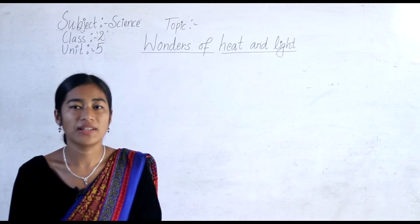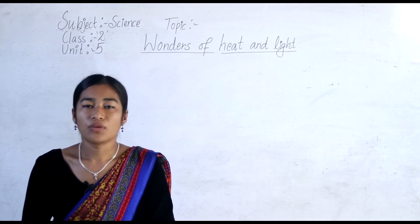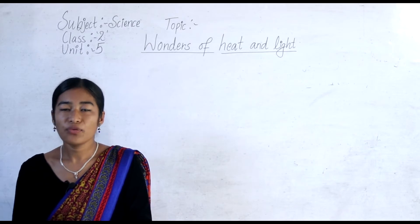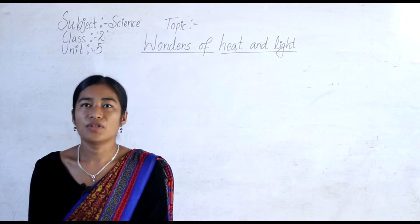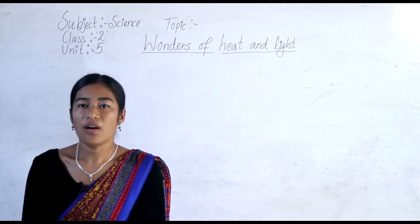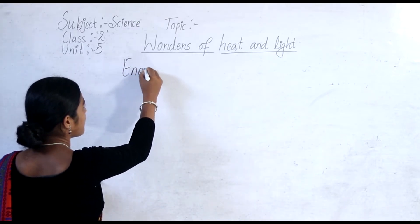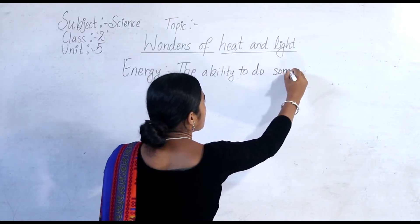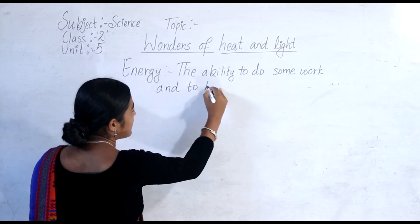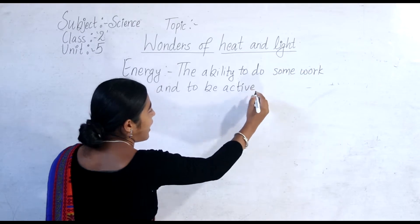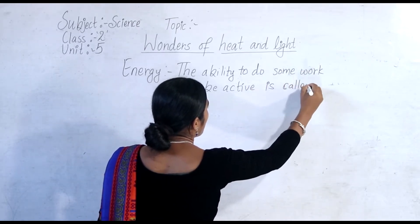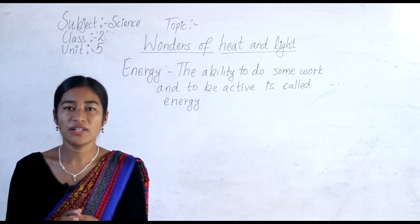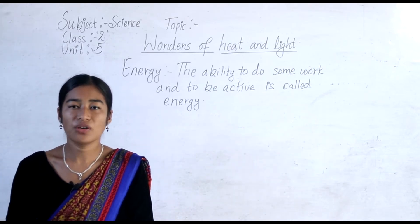So both light and heat energy are very important in our life. From this unit we will know the concept of energy. What is energy? When we eat food, we get energy — we are able to do work and we will be active. So energy means the ability to do some work and to be active. The definition of energy is: the ability to do some work and to be active is called energy. This lesson is very important, so you have to note it in your copy.